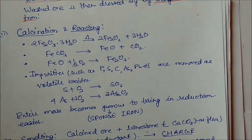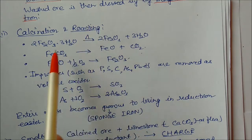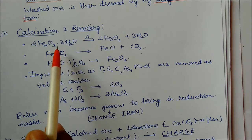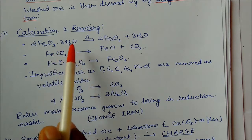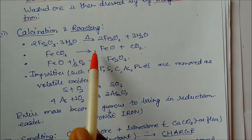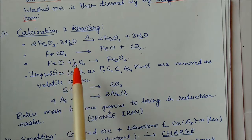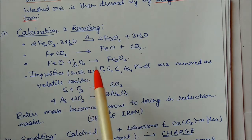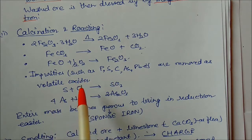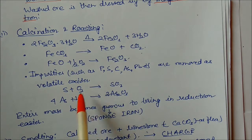In calcination, the process takes place in absence of air; in roasting it takes place in presence of air. Since ore contains different compounds: hydrated Fe2O3 on heating (calcination) becomes iron oxide plus water; FeCO3 gives iron oxide plus CO2; and FeO combines with oxygen and oxidizes to Fe2O3. Impurities such as phosphorus, sulfur, and carbon are removed as volatile oxides.